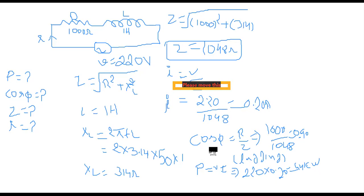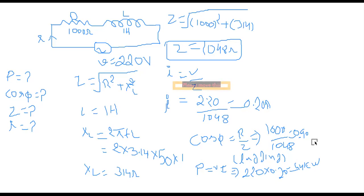The formula for power factor is cos φ = R/Z. With R = 1000 ohms and Z = 1048 ohms, the power factor is 0.90 lagging. It is lagging because in an RL series circuit the inductor causes current to lag behind the applied voltage by 90 degrees.